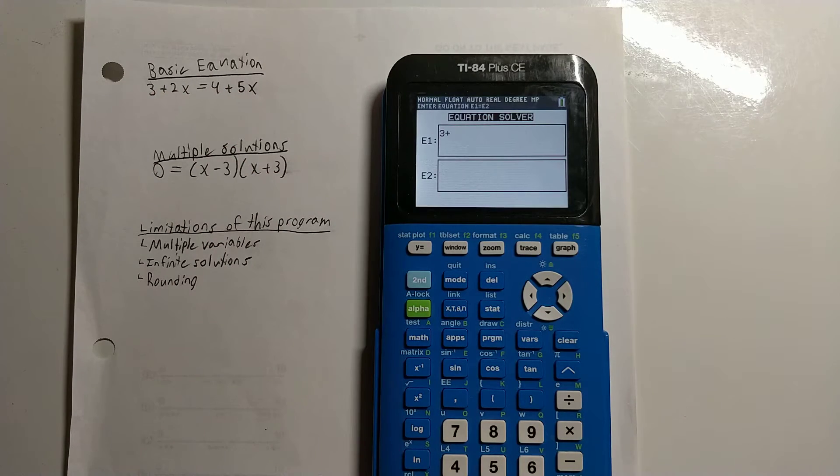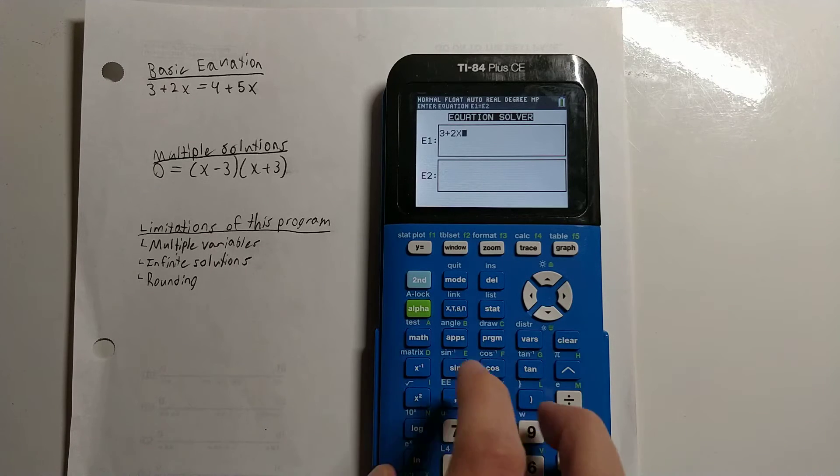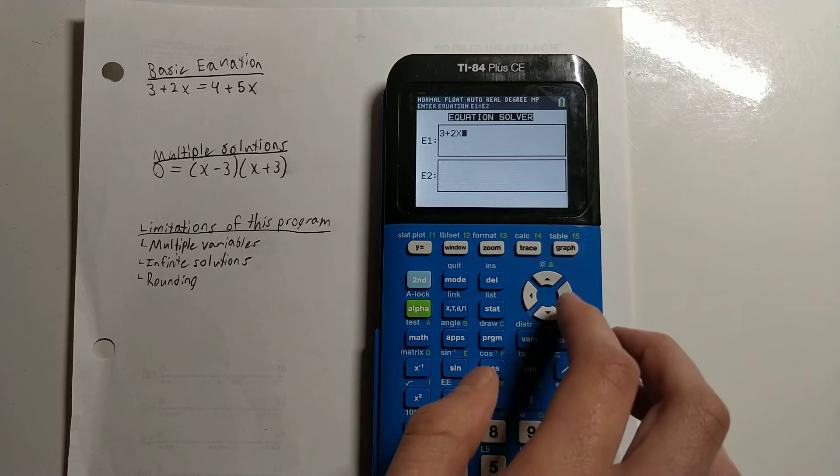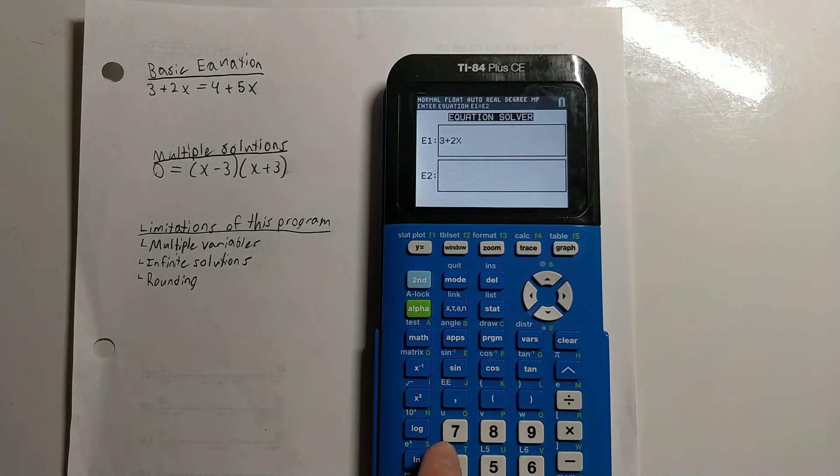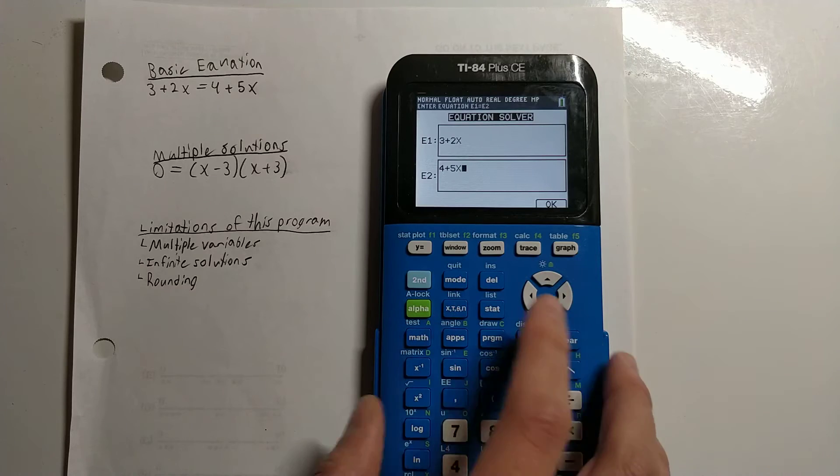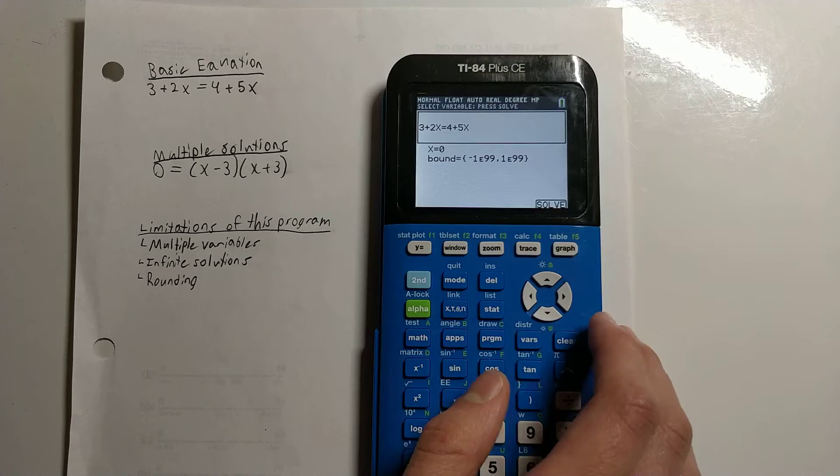So 3 plus 2, and then to type in x we press this X,T,θ,n button here. So 3+2x, and then press the down arrow key to get to E2, which is the right side of the equation. So 4+5x. And now to continue, press the OK button here, which is the graph button.